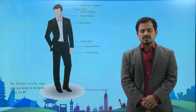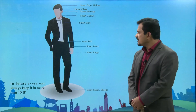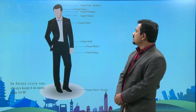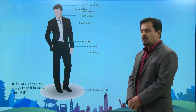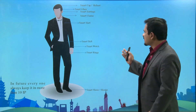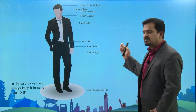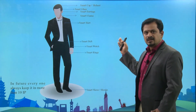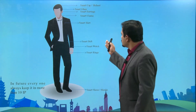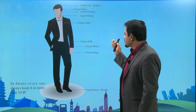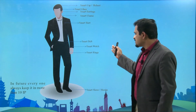If you take this diagram itself, one human being can have a smart cap or helmet, smart glass, smart earrings, smart clothes, and smart shirt — these are all wearable smart devices.